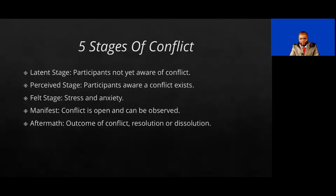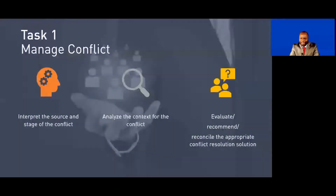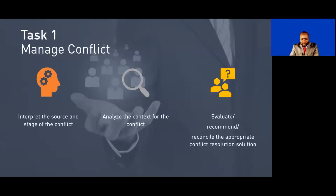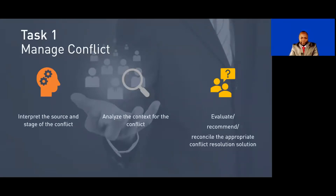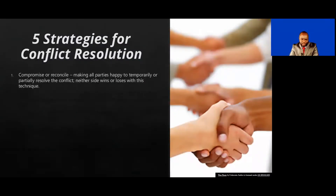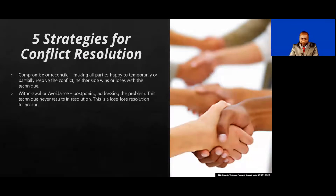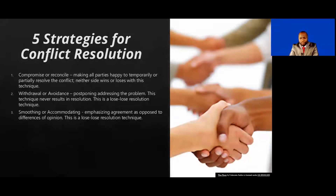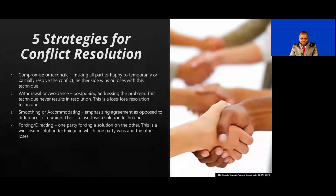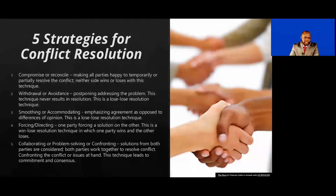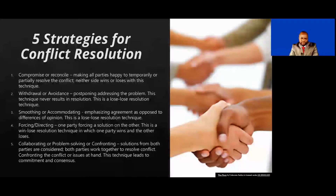The last of the three overarching things is to evaluate, recommend, or reconcile the appropriate conflict resolution solution. For your exam, you can expect questions that test how you are going to address the conflict. The PMBOK Guide has five strategies for conflict resolution: compromise or reconcile — making all parties happy, temporarily resolving the conflict; withdraw or avoid — don't address the conflict immediately; smooth or accommodate — emphasize agreement as opposed to different opinions; force or direct — one party forcing a solution on the other; and collaborate or problem solve, which we also call confront — solutions from both parties are considered, and it typically results in a win-win when done correctly.